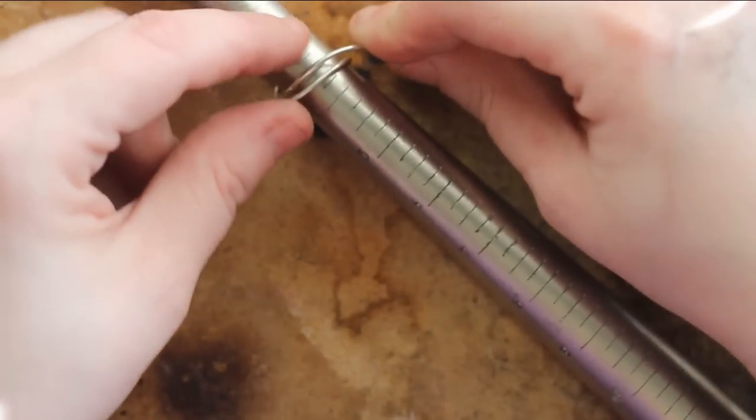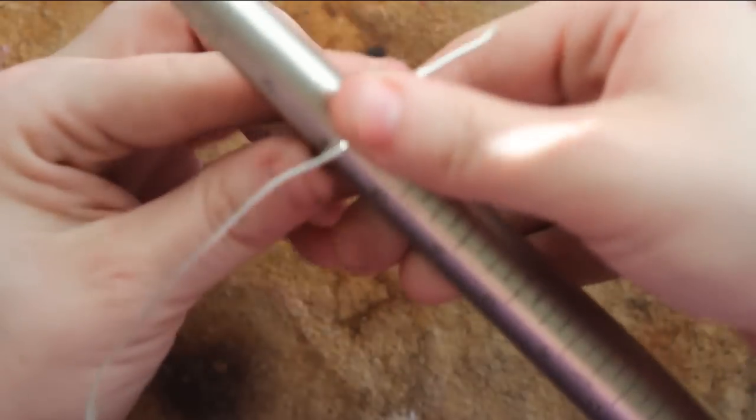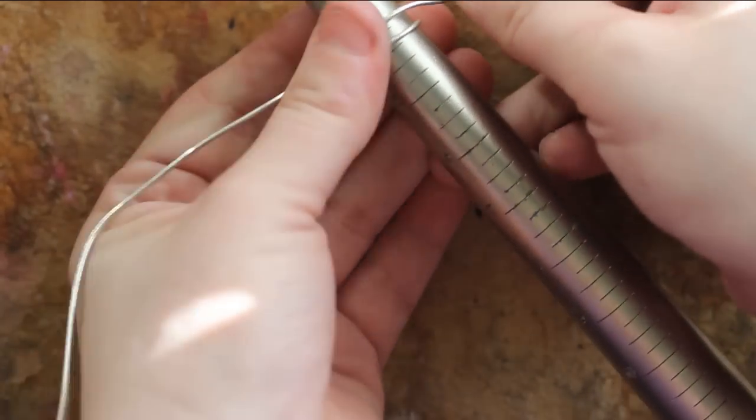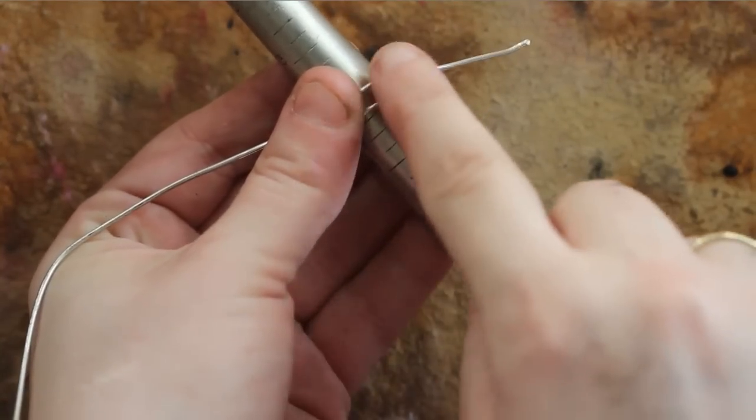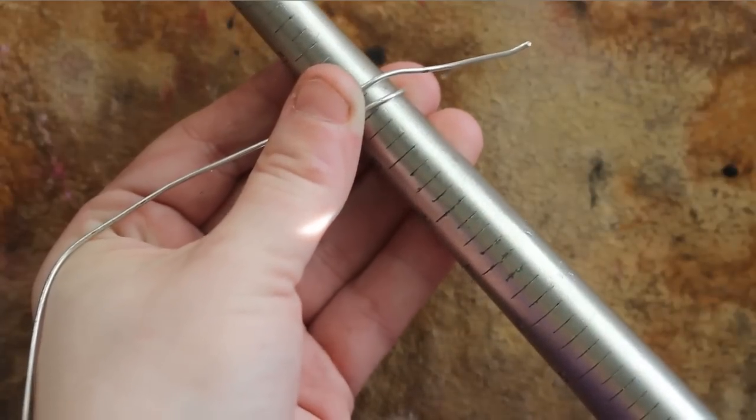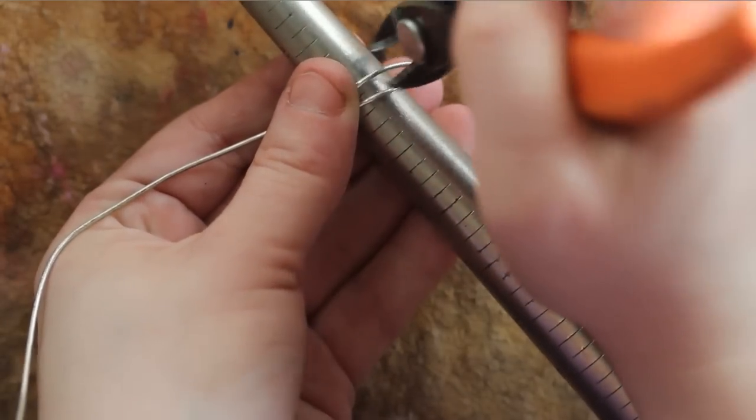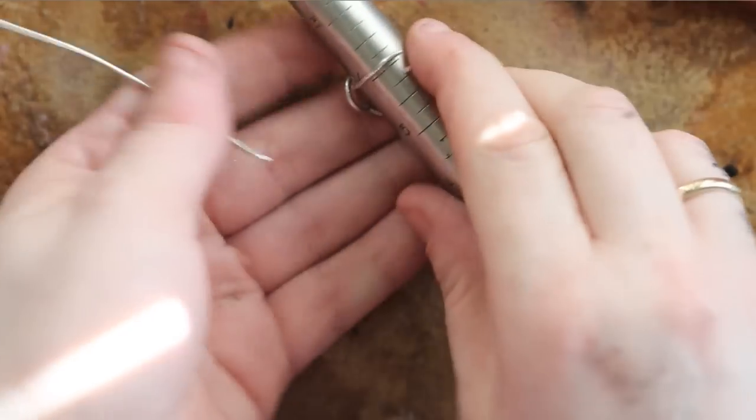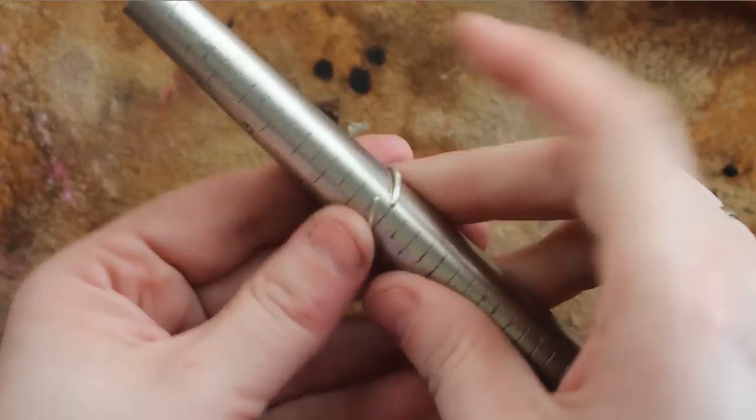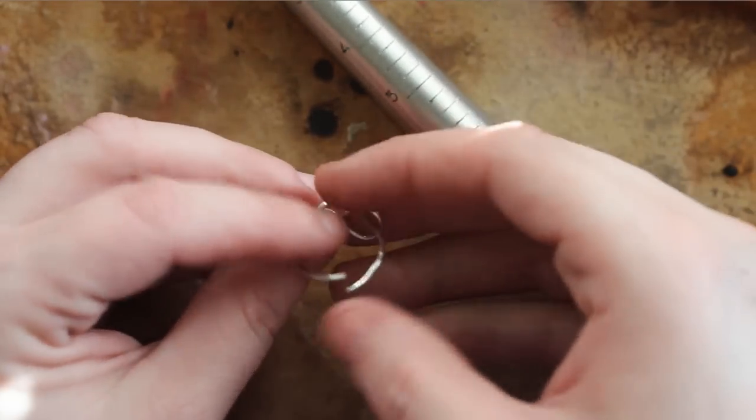All right, now as you can see here, I have wrapped it around my mandrel. And now I'm going to cut it. Remember, have it about two or three sizes smaller than what you want the finished product to be. Try to have it tightly wrapped around. And then you're going to get your cutters. You might have a little extra wire hanging off. It depends on how much you started with. But it's always better to have more than not enough. And then you're going to cut it. All right, there we go. So it's cut now. This is what we have.